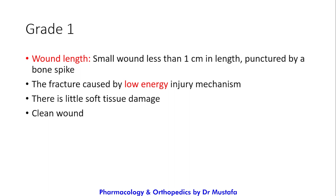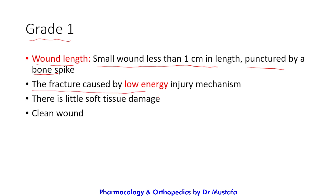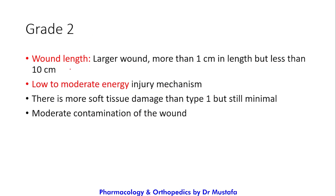In the Gustilo-Anderson classification we have three grades, and the third grade has three types. Grade one: the wound length is less than one centimeter, it is a puncture wound caused by a bone spike, from a low energy injury mechanism. There is little soft tissue damage and the wound is clean.